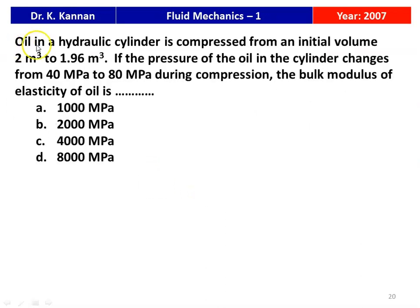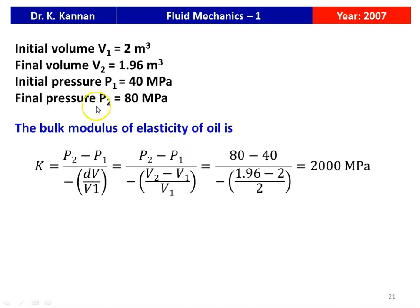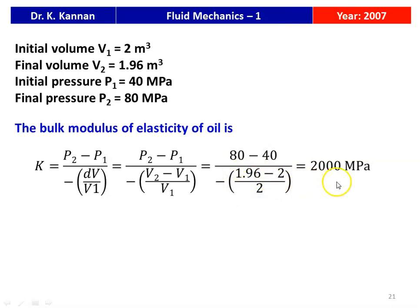Next question from the 2007 question paper: oil in a hydraulic cylinder is compressed from 2 m³ to 1.96 m³. Pressure changes from 40 MPa to 80 MPa. The bulk modulus of elasticity is — 1000, 2000, 4000, or 8000 MPa. Using K = ΔP/(−ΔV/V₁) = (80−40)/((2−1.96)/2) = 40/0.02 = 2000 MPa. The answer is 2000 MPa.